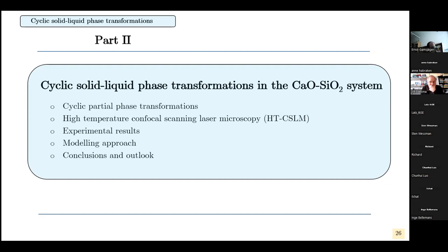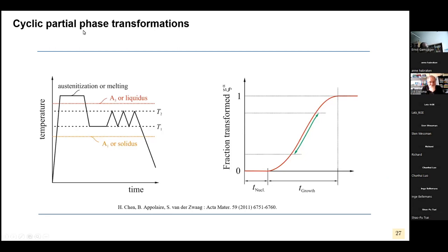What is the cyclic partial phase transformation? In order to avoid nucleation processes, it is good when both phases — here the solid and the liquid phase, or the austenite and the ferrite — are both present, so the front is migrating and the time for nucleation is not consumed. To achieve this, one has to cycle between the two-phase region, or at least make sure that both phases are always present.